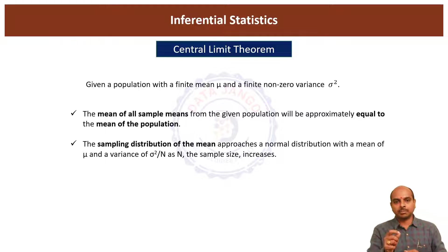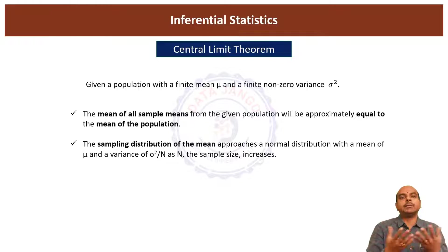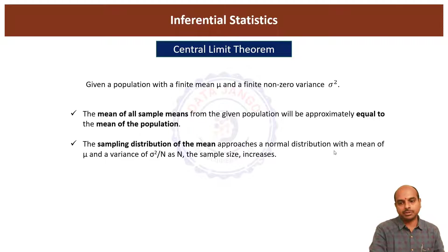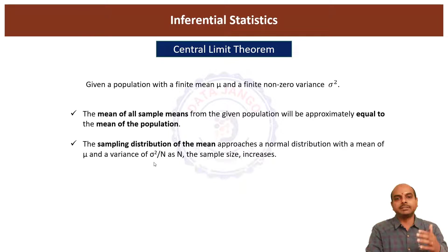The second and most important statement is the sampling distribution of means. Suppose you have taken 100 samples and their means. Those means will approach a normal distribution with mean mu and variance sigma squared by n. Here, mu is the population's mean and sigma squared is the variance of the population.